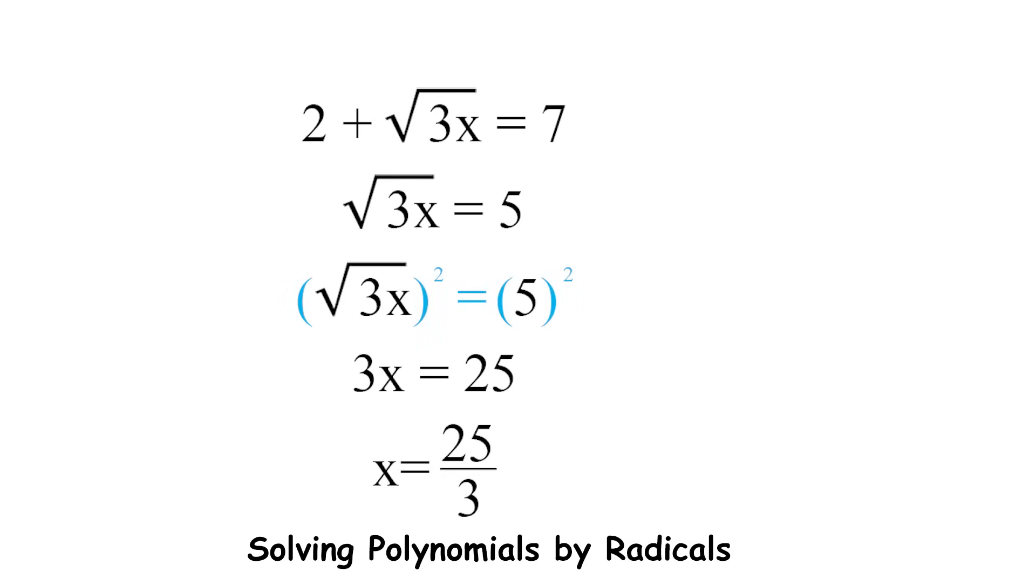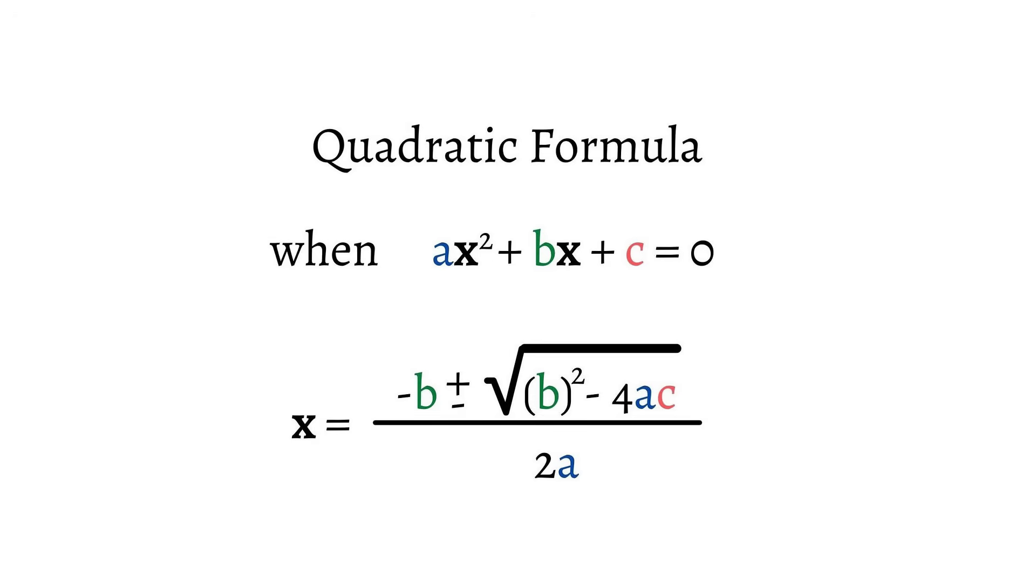Solving polynomials by radicals. You may remember learning the quadratic formula in high school math. This formula gives you a solution to any quadratic equation of the form ax squared plus bx plus c equals zero. The formula is: x equals negative b plus or minus the square root of b squared minus 4ac all over 2a. This is a nice, compact formula that allows you to find the solutions to any quadratic equation.